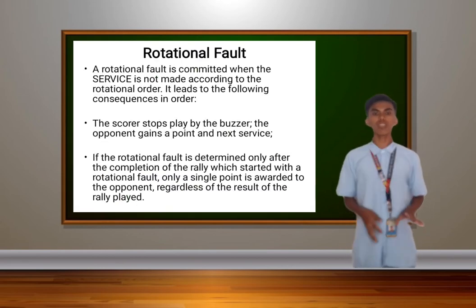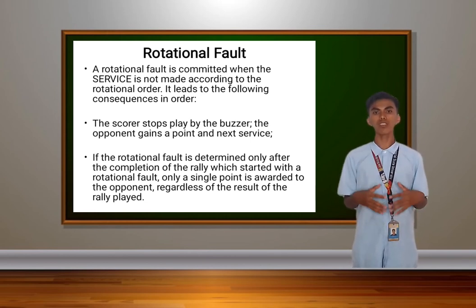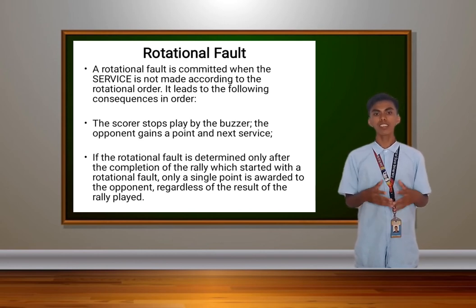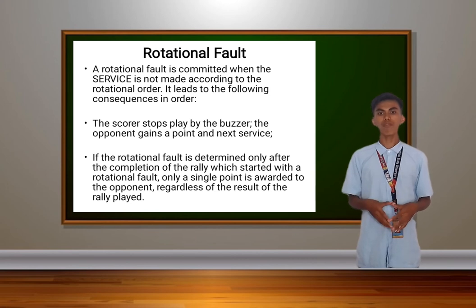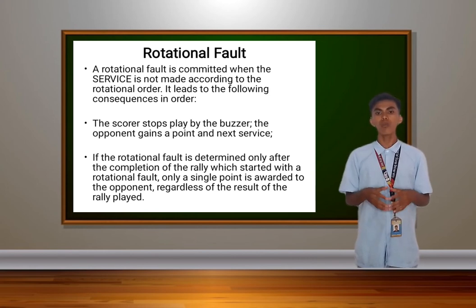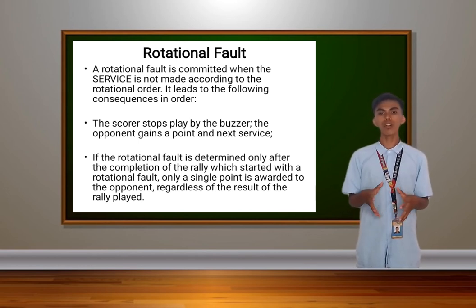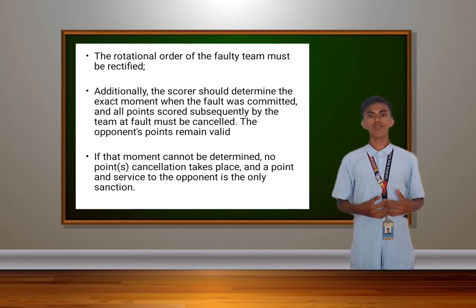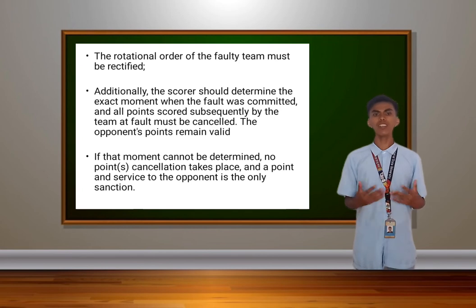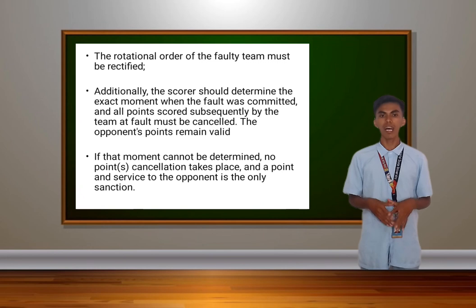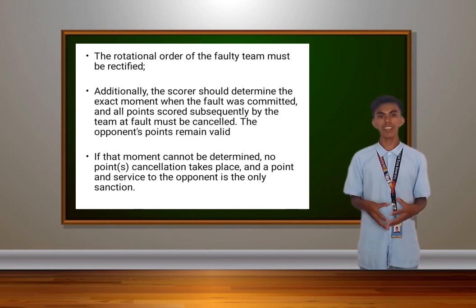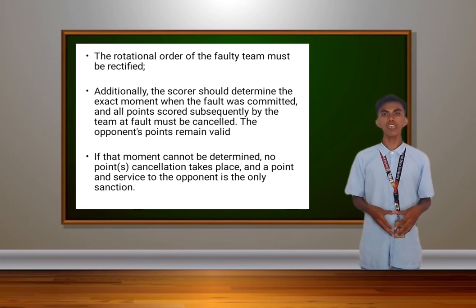Next is the rotational fault. A rotational fault is committed when the service is not made according to the rotational order. It leads to the following consequences: the scorer stops play by the buzzer, the opponent gains a point and the next service. If the rotational fault is determined only after the completion of the rally, only a single point is awarded to the opponent regardless of the result of the rally. The rotational order of the faulty team must be rectified. Additionally, the scorer determines the exact moment the fault was committed and all points scored subsequently by the team at fault are cancelled. The opponent's points remain valid. If that moment cannot be determined, no points cancellation takes place, and the point and service to the opponent is the only sanction.